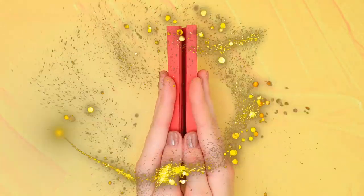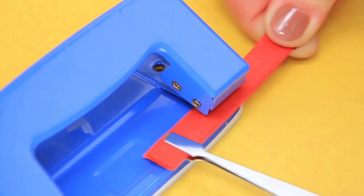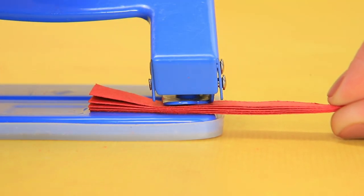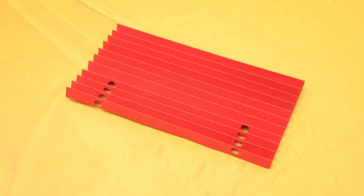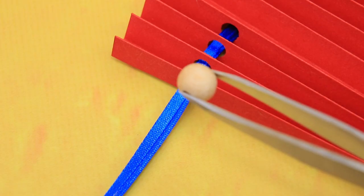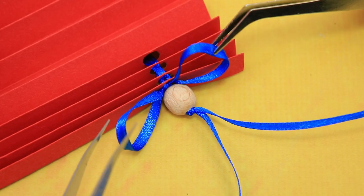Fold the paper like this. Make a couple of openings with a hole punch. Pull a satin ribbon through. Add wooden beads and bow ties.